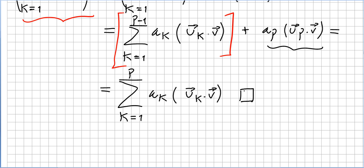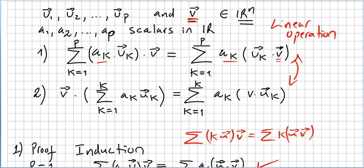And that concludes the proof for property 1. So we proved that the sum from k equals 1 to p of ak times uk, dotted with v, equals the sum from k equals 1 to p of ak times (uk · v). This one is proved by induction.